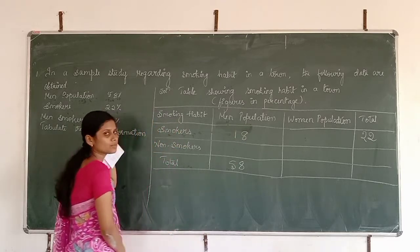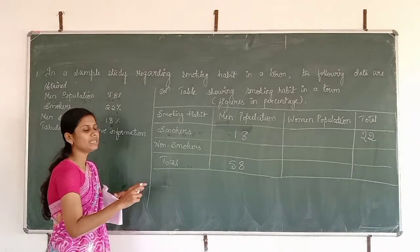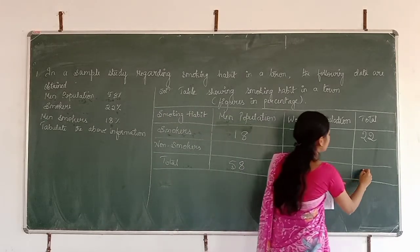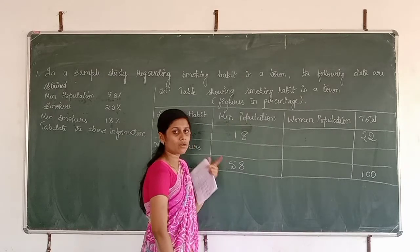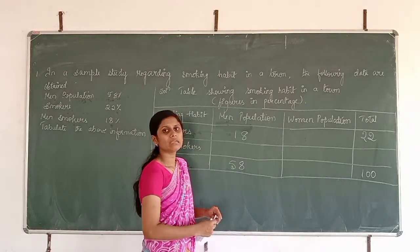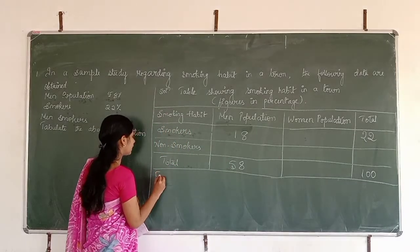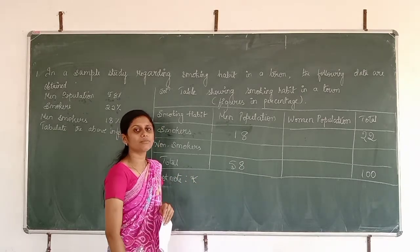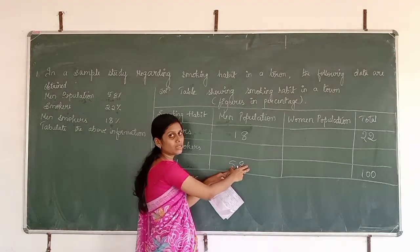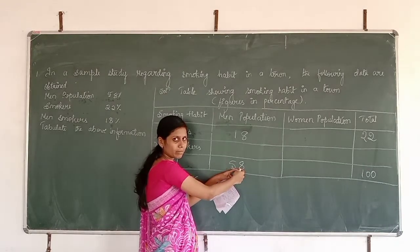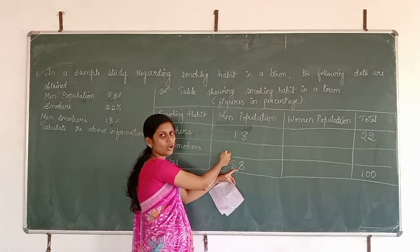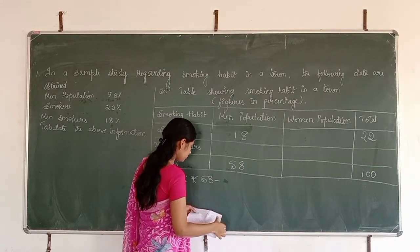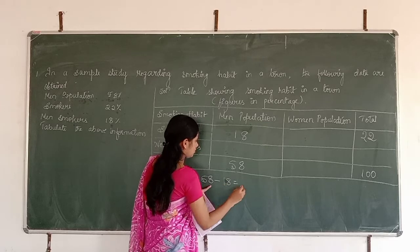Those are the three pieces of information provided. Now we fill the remaining cells. Since figures are in percentage, the grand total will be 100. Before filling blank cells, we note computed figures with a star. Men non-smokers: out of 58 men, 18 are smokers, so 58 minus 18 equals 40.